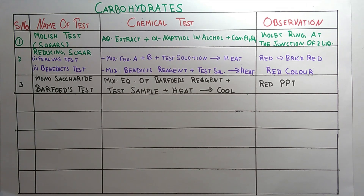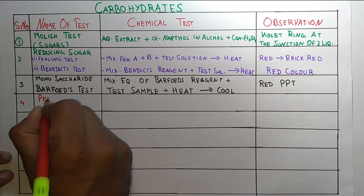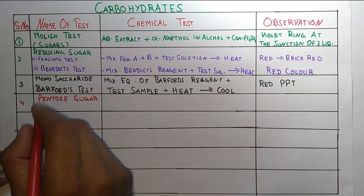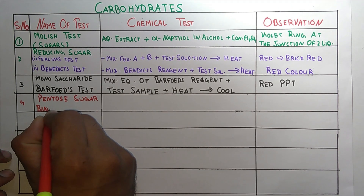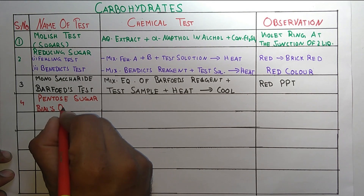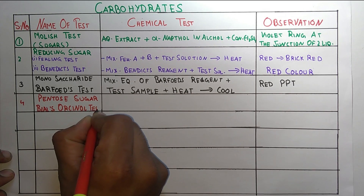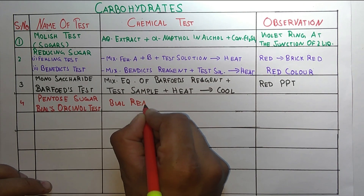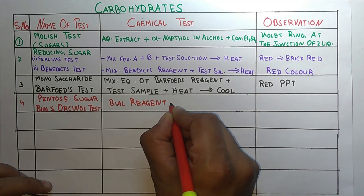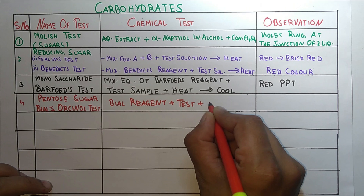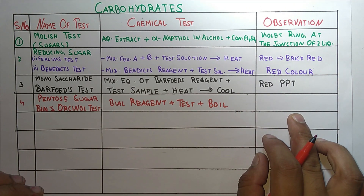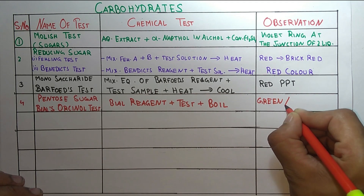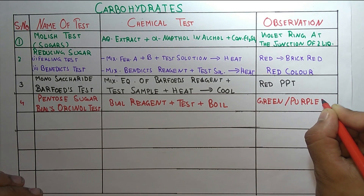The fourth test is for pentose sugars. The test used is Bial's orcinol test. The procedure is: take Bial's reagent plus the test sample, then boil. The observation is that a green or purple color appears.